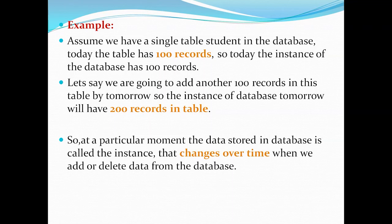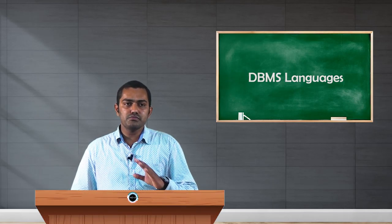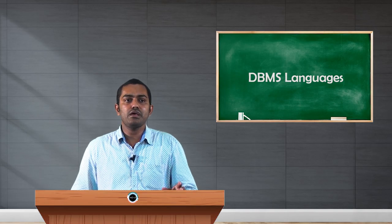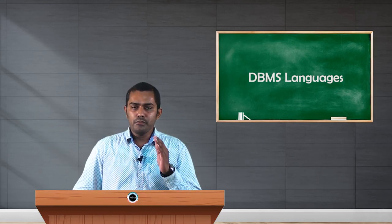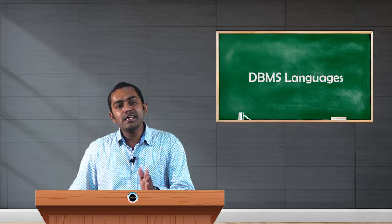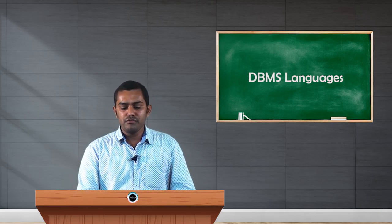For example, imagine we have a student database with a hundred records — we say there are a hundred instances. If we check again tomorrow after inserting more records, say another hundred, the table now has two hundred records. At that moment, there are two hundred instances. As time changes, the number of instances also changes, because we can add or remove instances from a database. Depending upon the time and situation, we will get a different number of instances for one particular database.